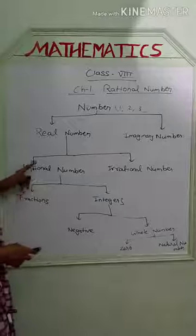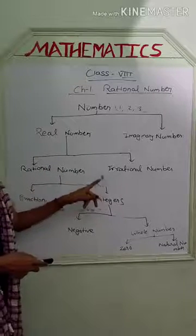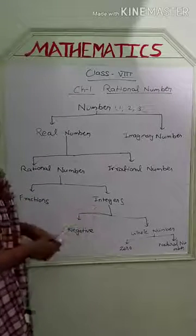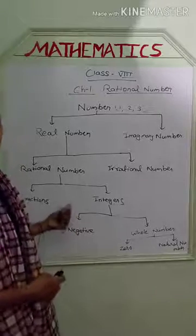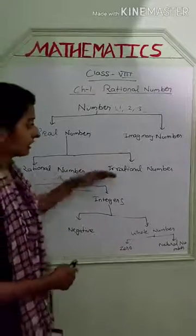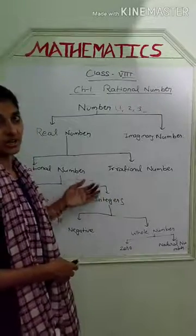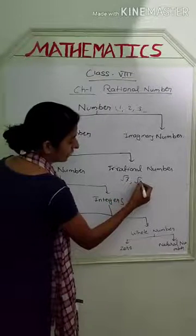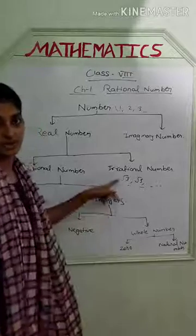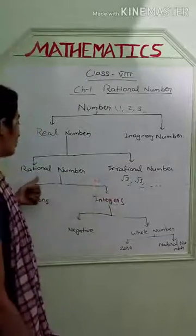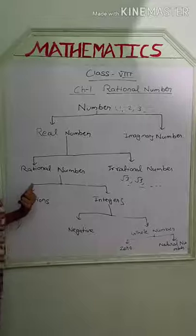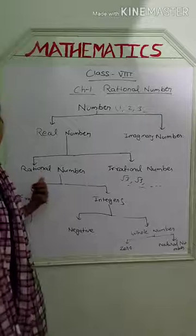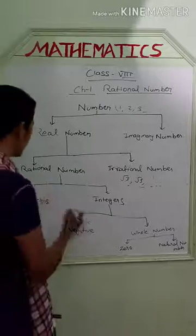The difference between rational and irrational numbers is that rational numbers include fractions and integers. Numbers which are not rational are irrational. For example, root 3 and root 5 are irrational numbers. Now, come to the rational number — this is our main topic which we have to study in this chapter, so you have to focus more on this topic.